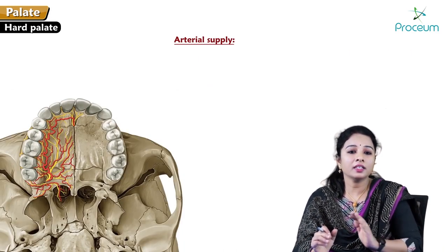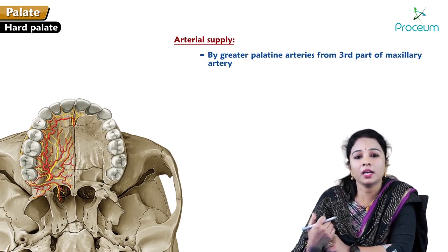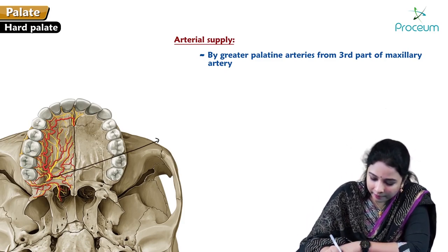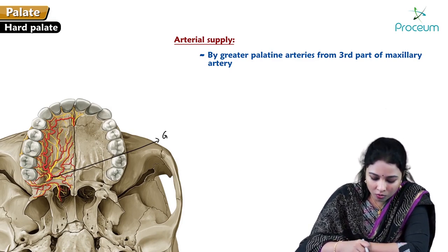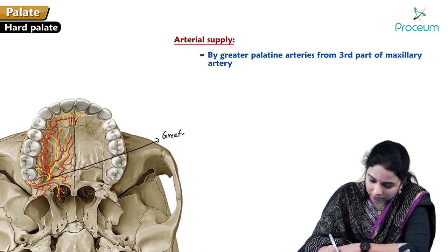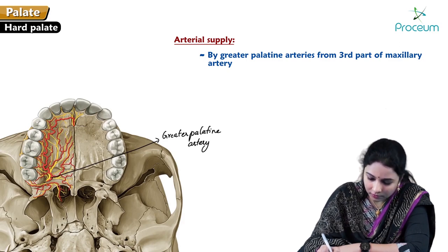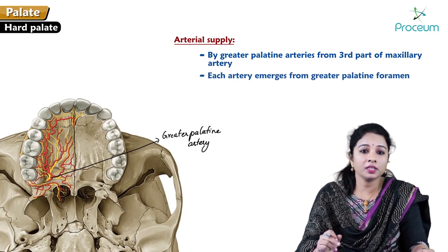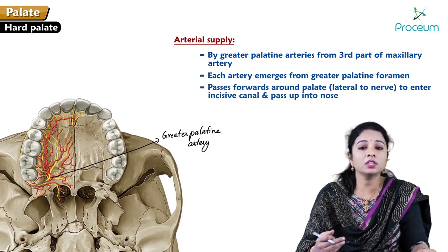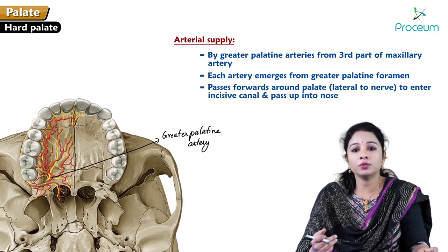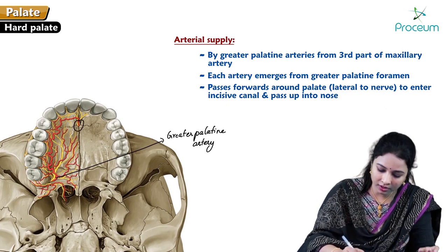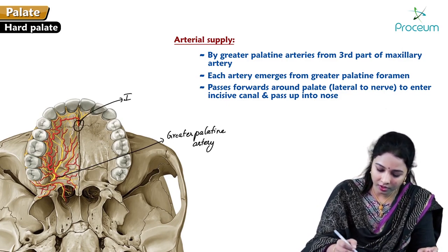The arterial supply to the hard palate is by the greater palatine arteries, which are branches of the third part of the maxillary artery. Each artery emerges from the greater palatine foramen, passes forward around the palate lateral to the nerve, enters the incisive canal, and passes upward into the nose.